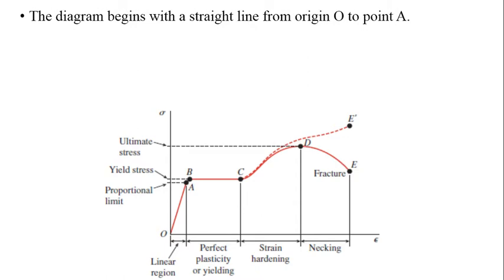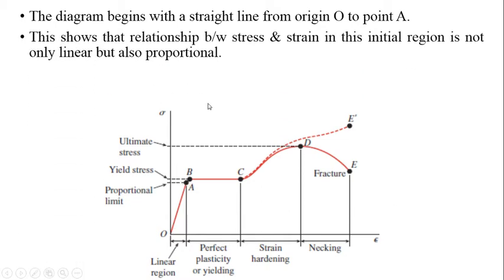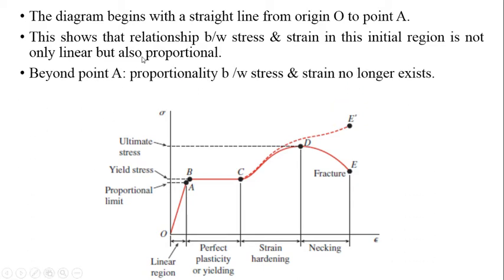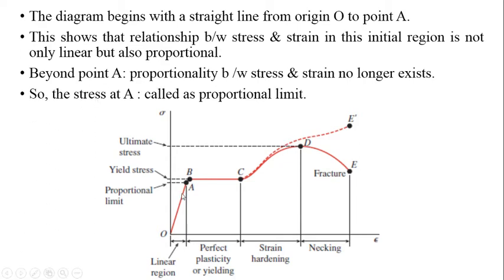The diagram begins with a straight line from origin O to point A, showing that the relationship between stress and strain in this initial region is not only linear but also proportional. Beyond point A, proportionality between stress and strain no longer exists — and the stress at point A is called the proportional limit.